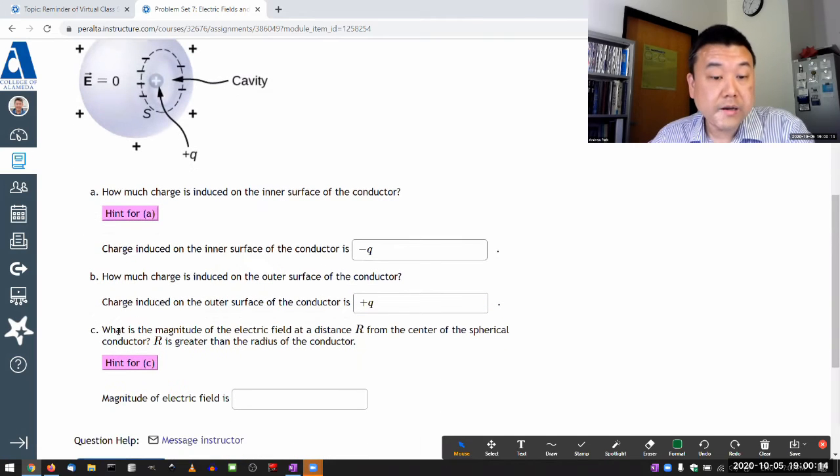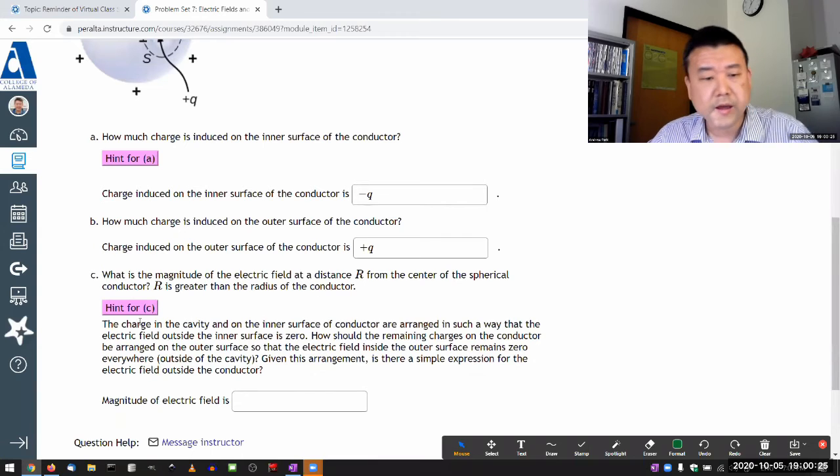And finally, what is the magnitude of the electric field at a distance r from the center of the spherical conductor, where r is greater than the radius of the conductor? So I think in the hint, I give you some hint—read through that.